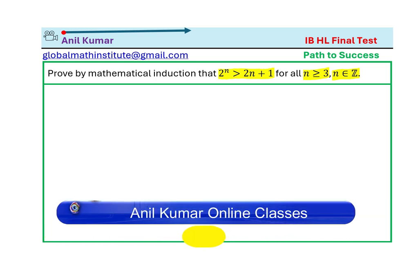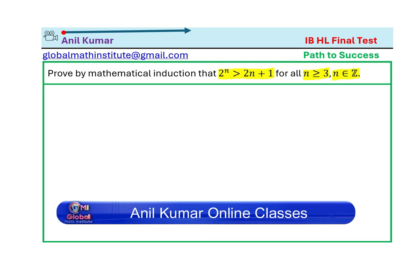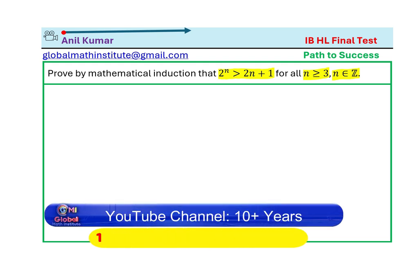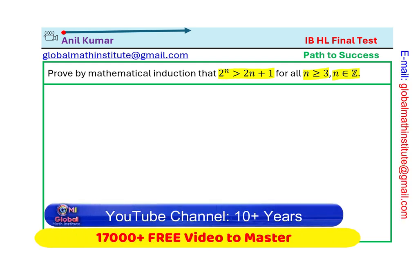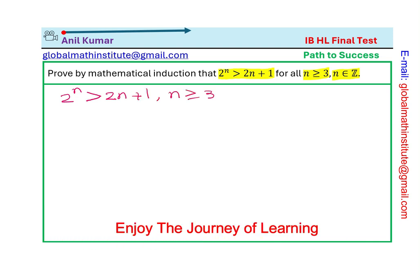Let us first understand what method of induction is. In this, first step always is to show that this statement which is inequality statement here is true for the starting point which is 3 in this case. So basically we need to prove that 2 to the power of n is greater than 2n plus 1 where n is greater than equal to 3. So test it for n equals to 3 itself first.